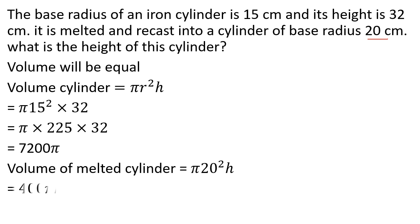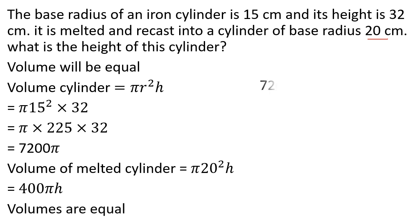The volume of the melted cylinder: radius is 20, so π × 20² × h = 400πh. Since the two volumes are equal, we set 400πh equal to the original volume and solve for h.